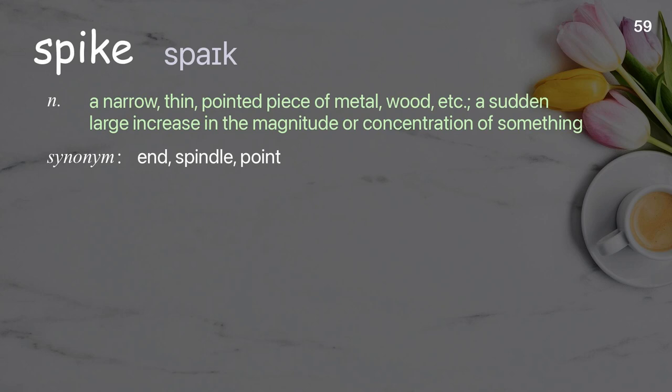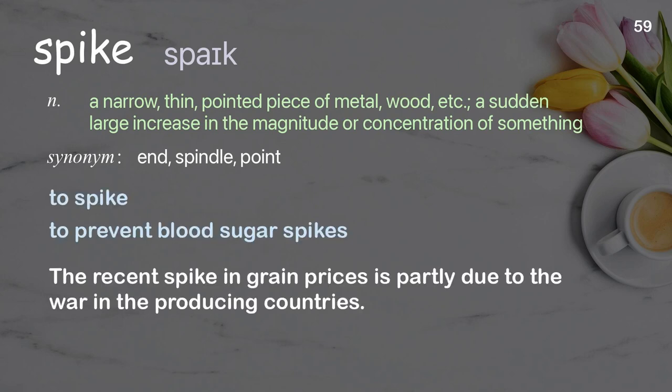Spike: A narrow, thin, pointed piece of metal, wood, etc. Also, a sudden large increase in the magnitude or concentration of something. Examples: To spike, to prevent blood sugar spikes. The recent spike in grain prices is partly due to the war in the producing countries.